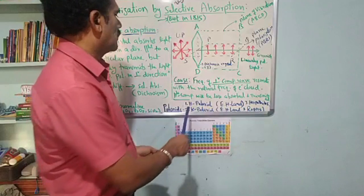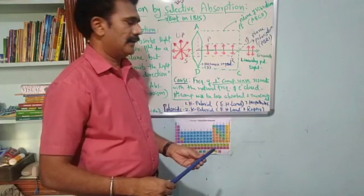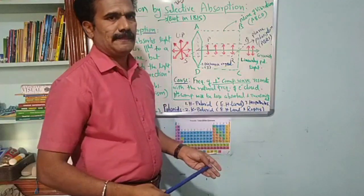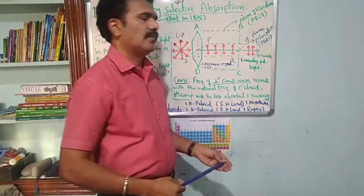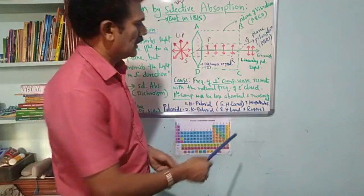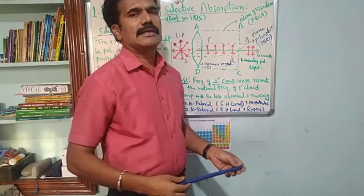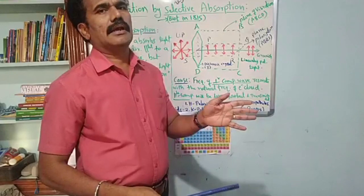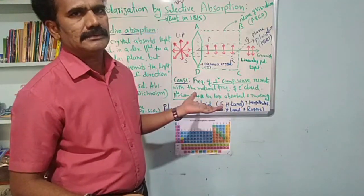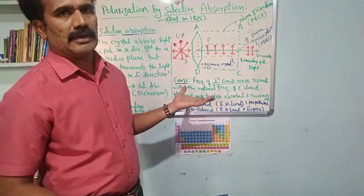H-polaroids are developed by E.H. Land. K-polaroids are developed by E.H. Land and others. Herapathite type polaroids are developed by W.B. Herapathite. The specialty of Herapathite polaroids is they can transmit light of all colors. This is a simple concept. I hope you got all the points clear.